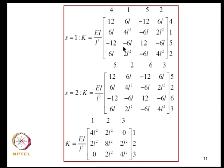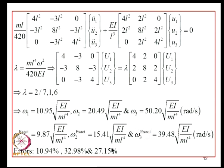The governing equation of motion is then the 3×3 mass matrix times the acceleration vector plus the 3×3 stiffness matrix times [U1, U2, U3] equals zero. To find natural frequencies we introduce the parameter λ = ML⁴ω²/(420EI). The eigenvalue problem reads in terms of the K and M matrices. Solving gives three eigenvalues: 2/7, 1, and 6, from which ω1 = 10.95, ω2 = 20.49, and ω3 = 50.20 times √(EI/ML⁴).